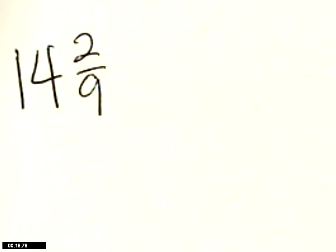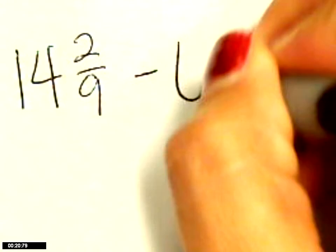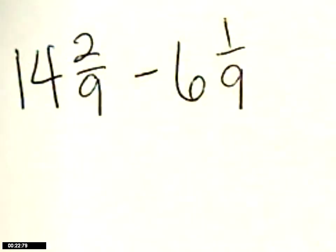Number 2 says 14 and 2/9. Oops, you can't see that. There it is. 14 and 2/9 minus 6 and 1/9. This is number 2 on page 22.